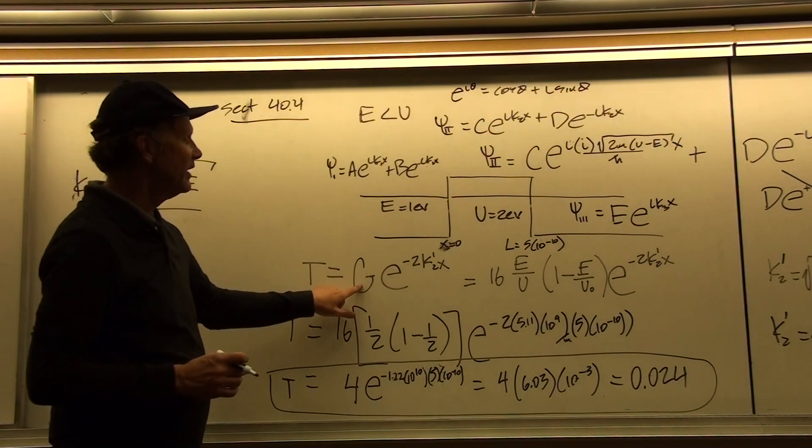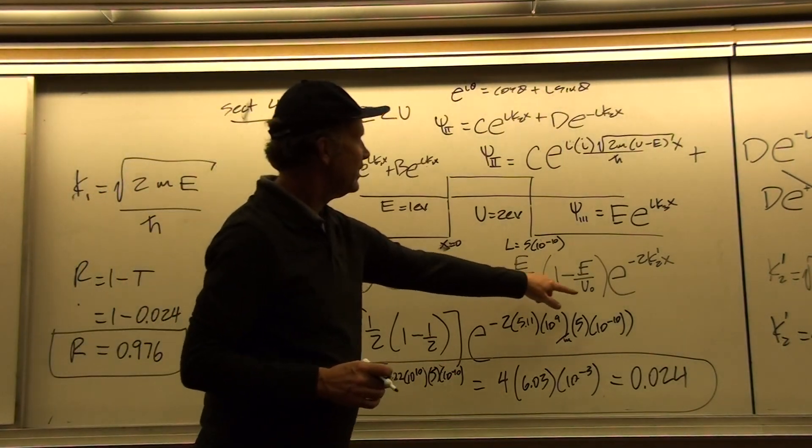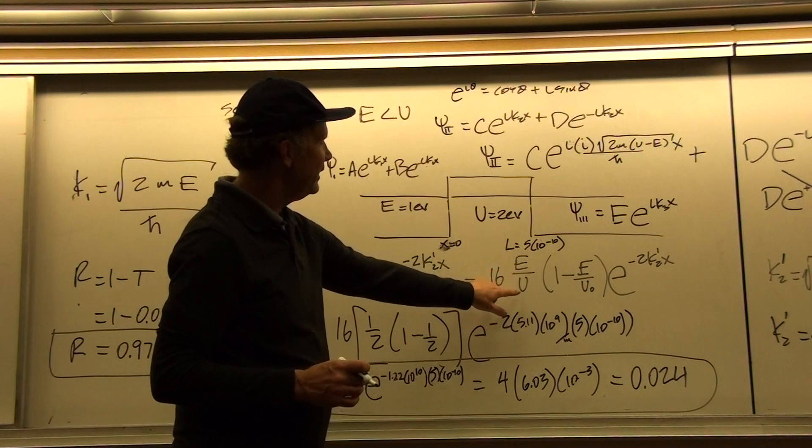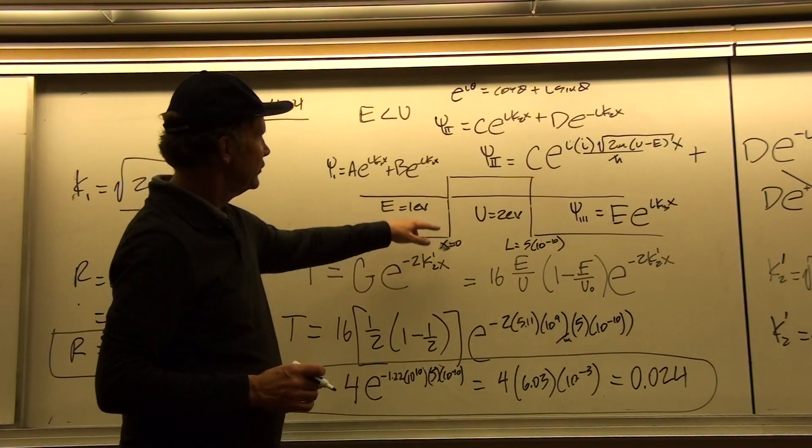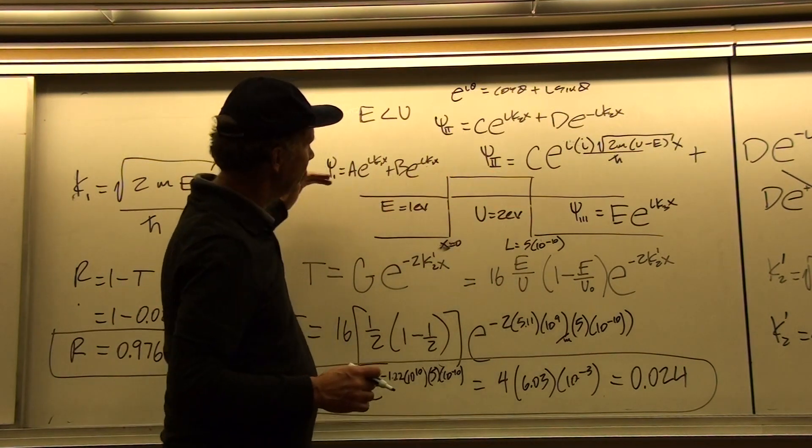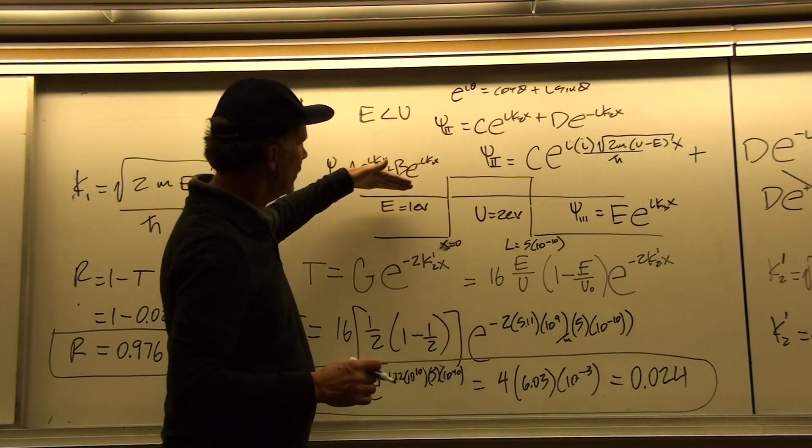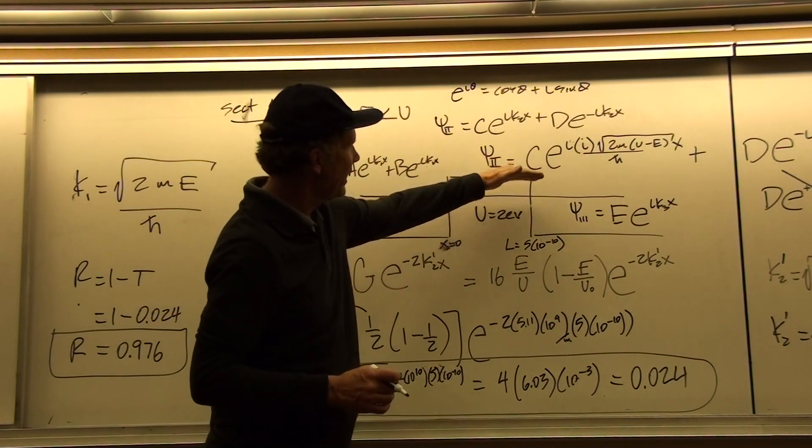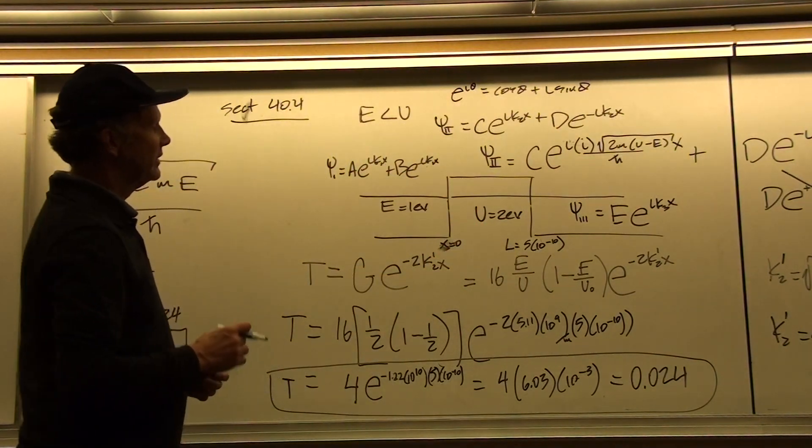the book gives you this expression for the algebraic solution. Now g here is just a constant that relates to e and u and it just works for a particle that's incident on a barrier where the energy is less than the step height